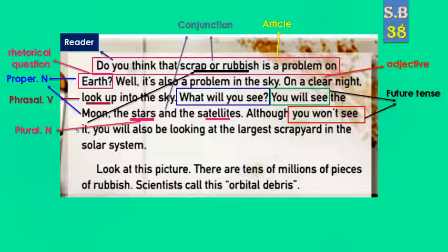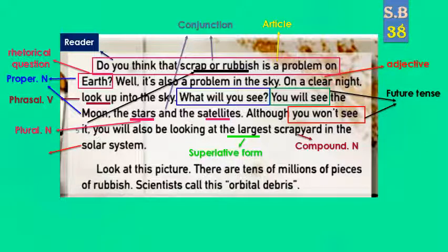You will also be looking at the largest scrapyard in the solar system — ستشاهد أيضًا أكبر ساحة خردة في النظام الشمسي. 'The largest' is the superlative form — شكل من أشكال التفضيل. 'Scrapyard' is made of two nouns so it is a compound noun — اسم مركب — meaning ساحة خردة. 'Solar' is an adjective — في النظام الشمسي.